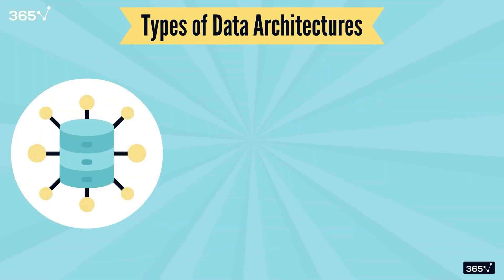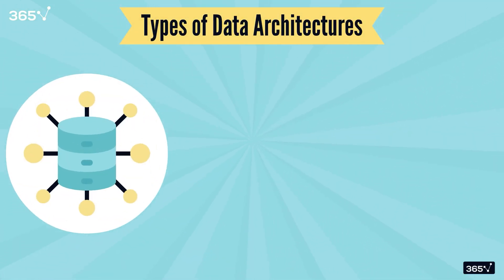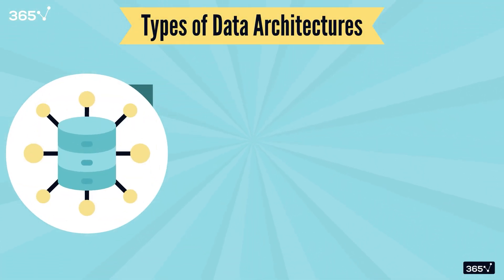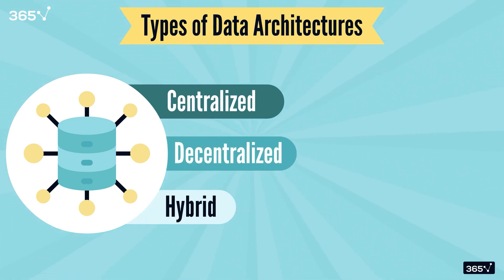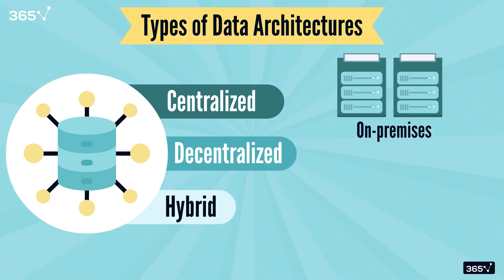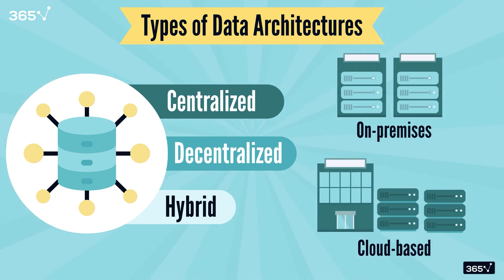There are three distinct types of architectures commonly seen across the industry today: centralized, decentralized, and hybrid data architectures. Irrespective of which architecture you choose to build, the entire system can be hosted either on-premises, in a private environment, or on a cloud-based environment. Let's dive deep into each of these concepts individually.